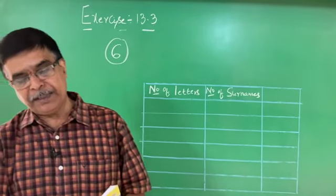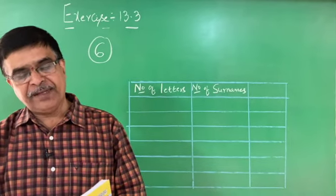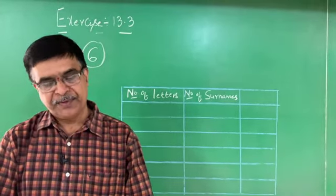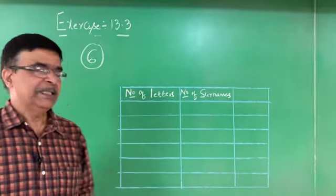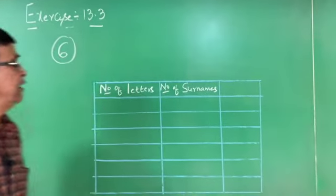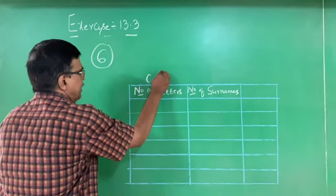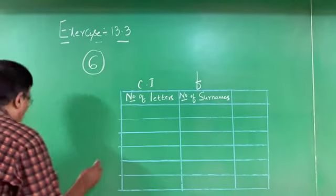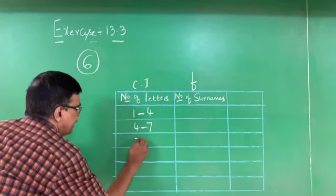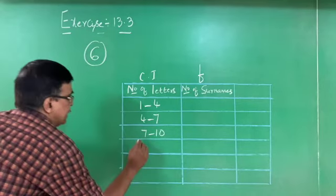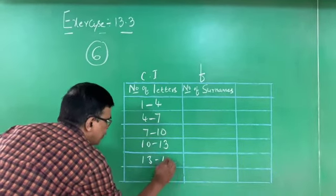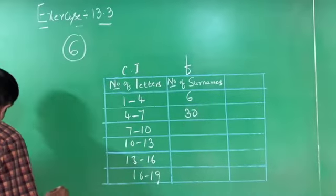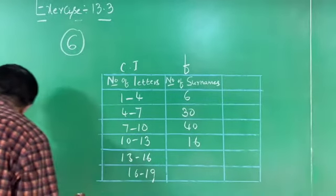Problem number 3 (Exercise 13.3, Problem 6): 100 surnames were randomly picked from a local telephone directory. The frequency distribution of the number of letters in the English alphabet in the surnames is given. Determine the median number of letters in the surnames. The class intervals (number of letters) are 1–4, 4–7, 7–10, 10–13, 13–16, 16–19, with frequencies 6, 30, 40, 16, 4, 4.